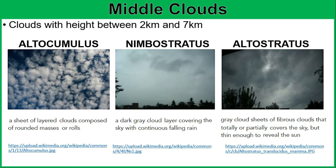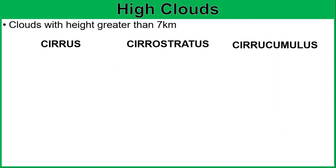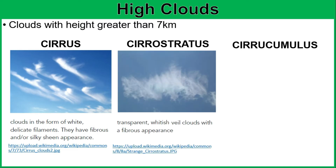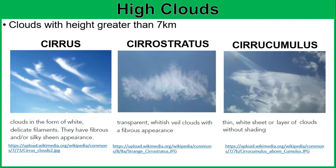Now let's go to the high clouds, with heights greater than 7 kilometers. We have three kinds. First is the cirrus cloud — clouds in the form of white, delicate filaments with fibrous and/or silky sheen appearance. Next, cirrostratus — transparent, whitish veil clouds with a fibrous appearance. And finally, cirrocumulus — described as a thin white sheet or layer of clouds without shading.